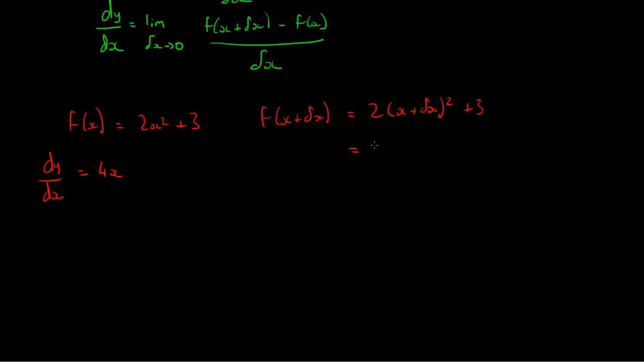We multiply this out, we end up with 2x squared plus 4x delta x, plus 2 delta x squared plus 3.